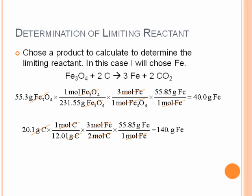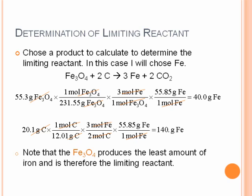Looking at those results: the iron oxide produces 40 grams of iron, but from the carbon I could produce 140 grams of iron — meaning all of the Fe3O4 is used up first. So Fe3O4 is the limiting reactant because it produces the least amount of product. We find that our theoretical yield of iron is 40 grams — that is the amount of iron actually produced.